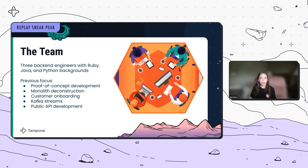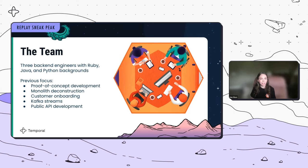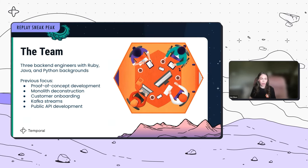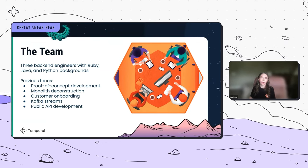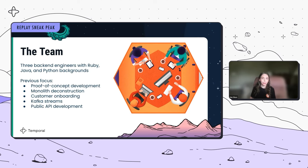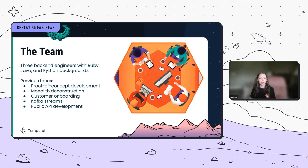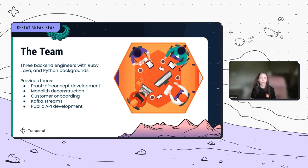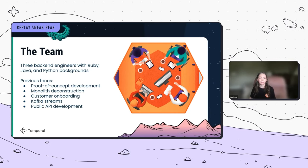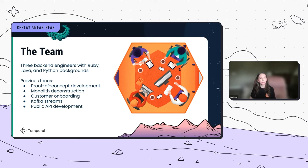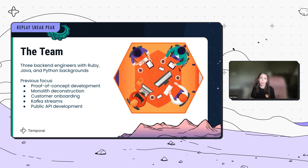I'll tell you a little bit about the team behind this initiative. Our team is pretty small — we had three back-end engineers while building this, and we all brought diverse backgrounds in Ruby, Java, and Python. We had previously done a lot of development within our Rails monolith app, working on features and API development. Working in Kotlin was brand new for two of us, but we really enjoyed the concise syntax, static typing, and building something from the ground up.